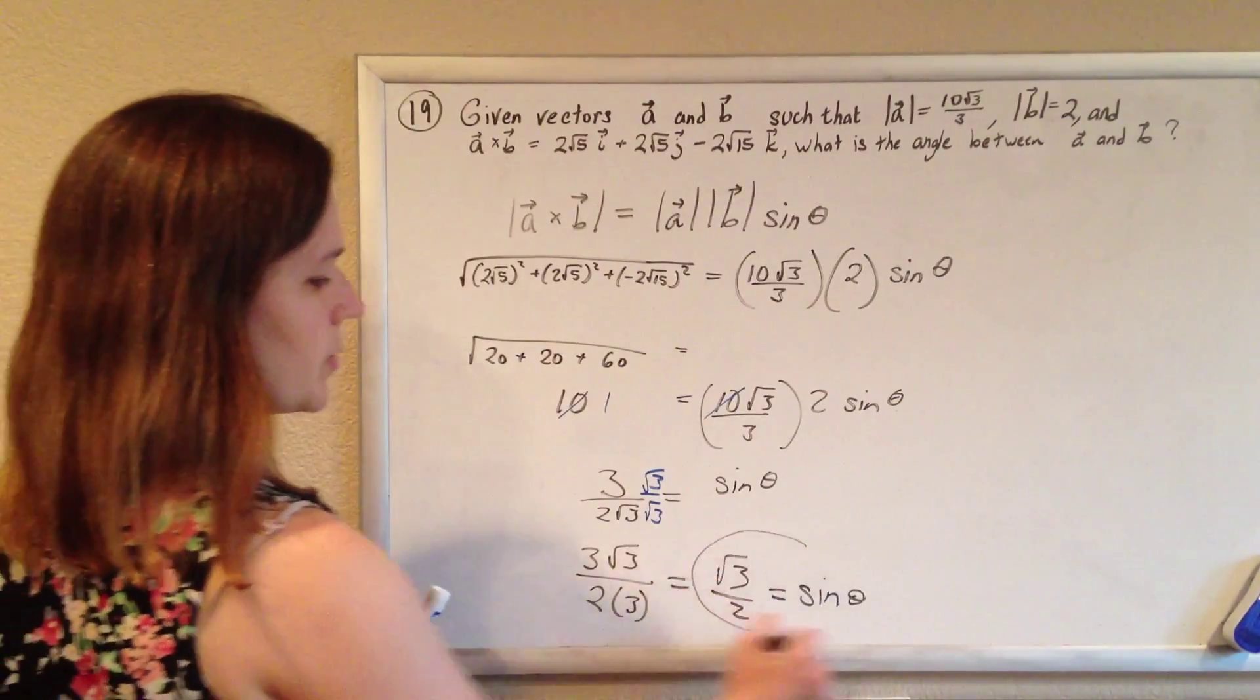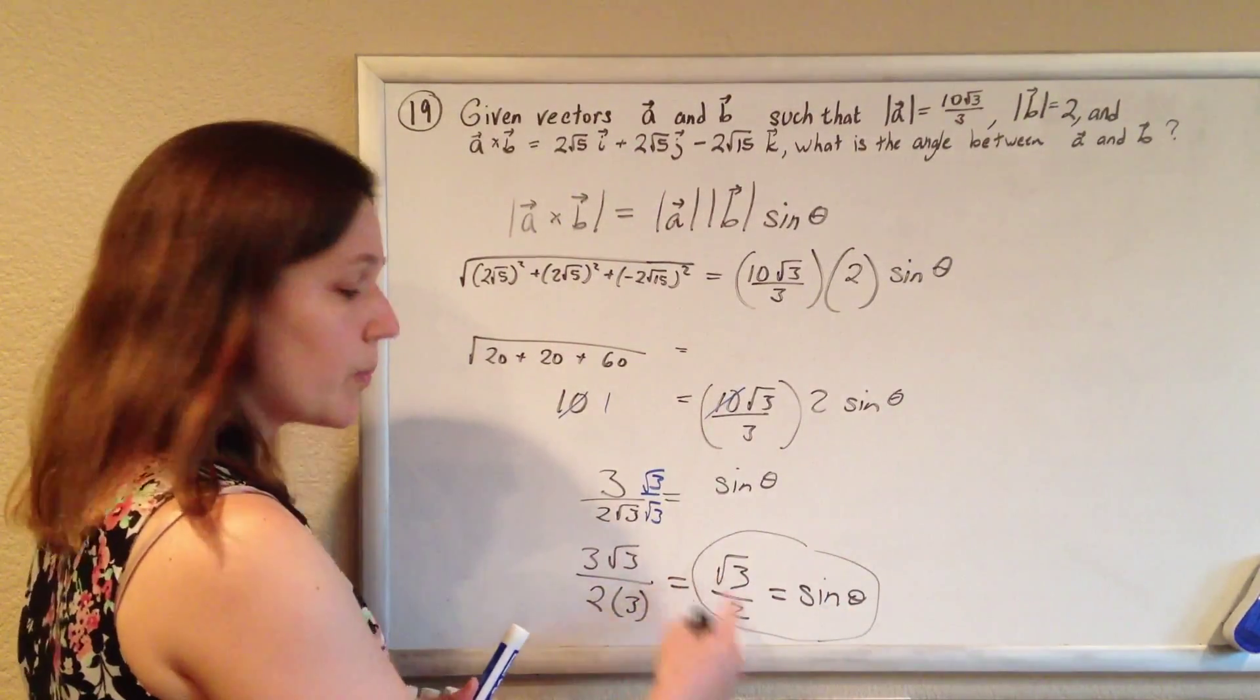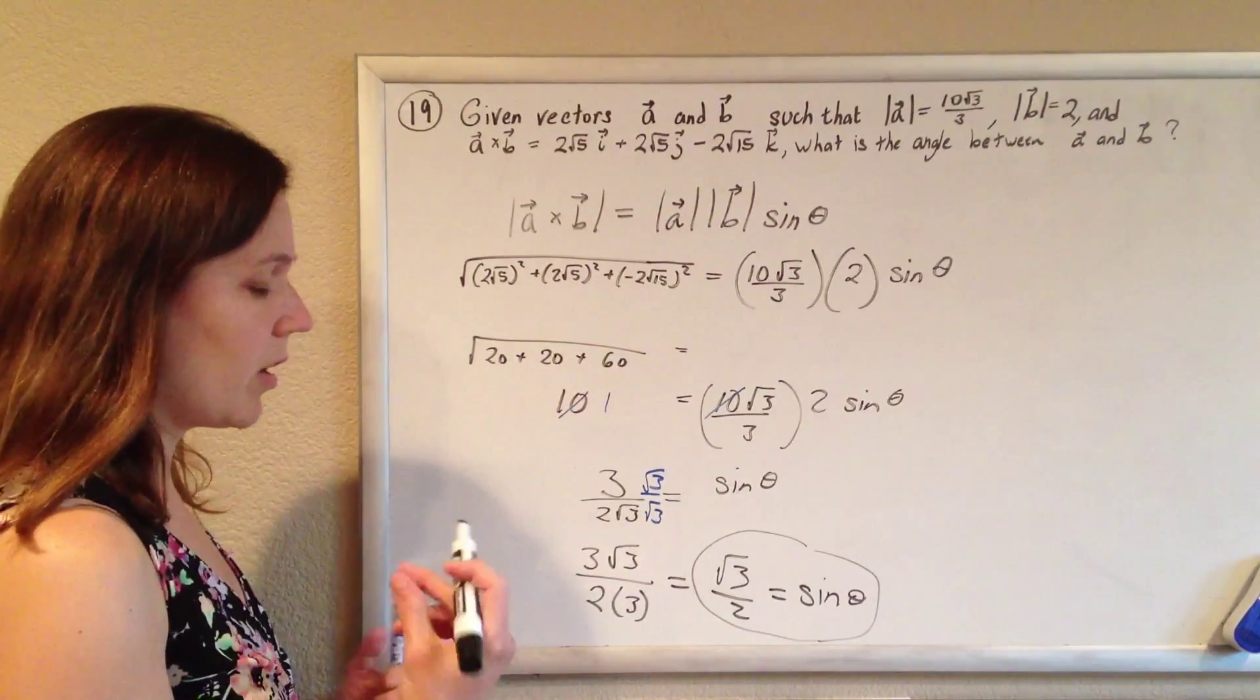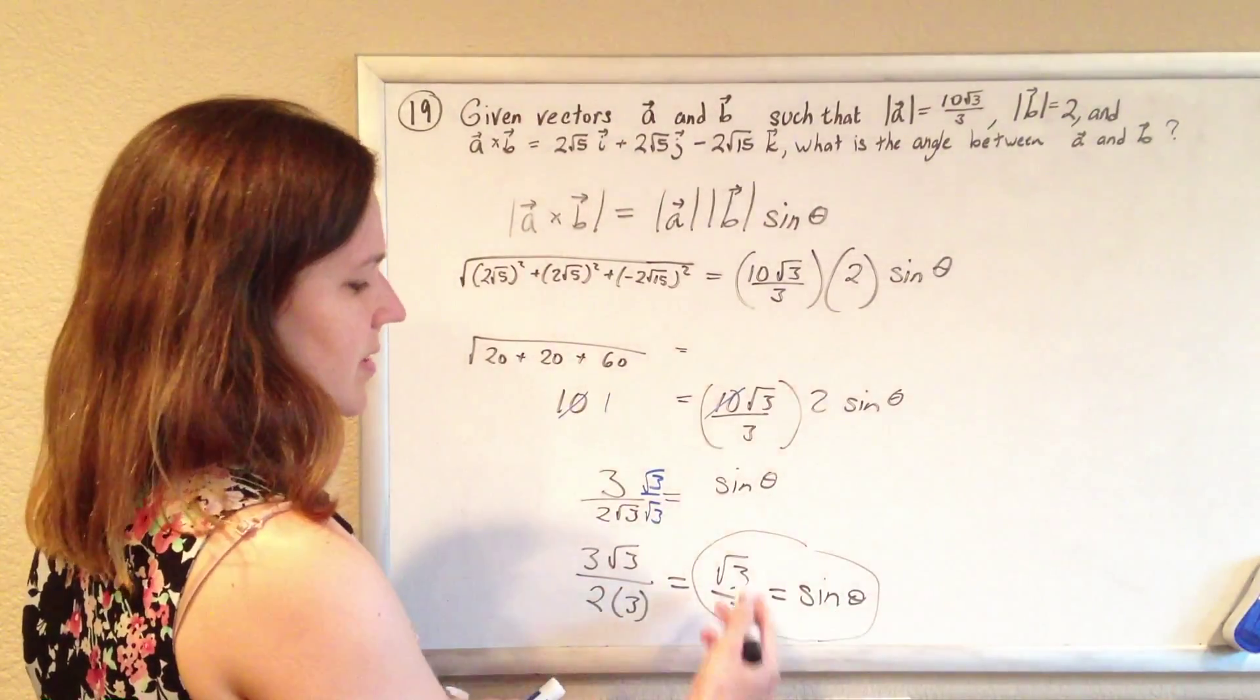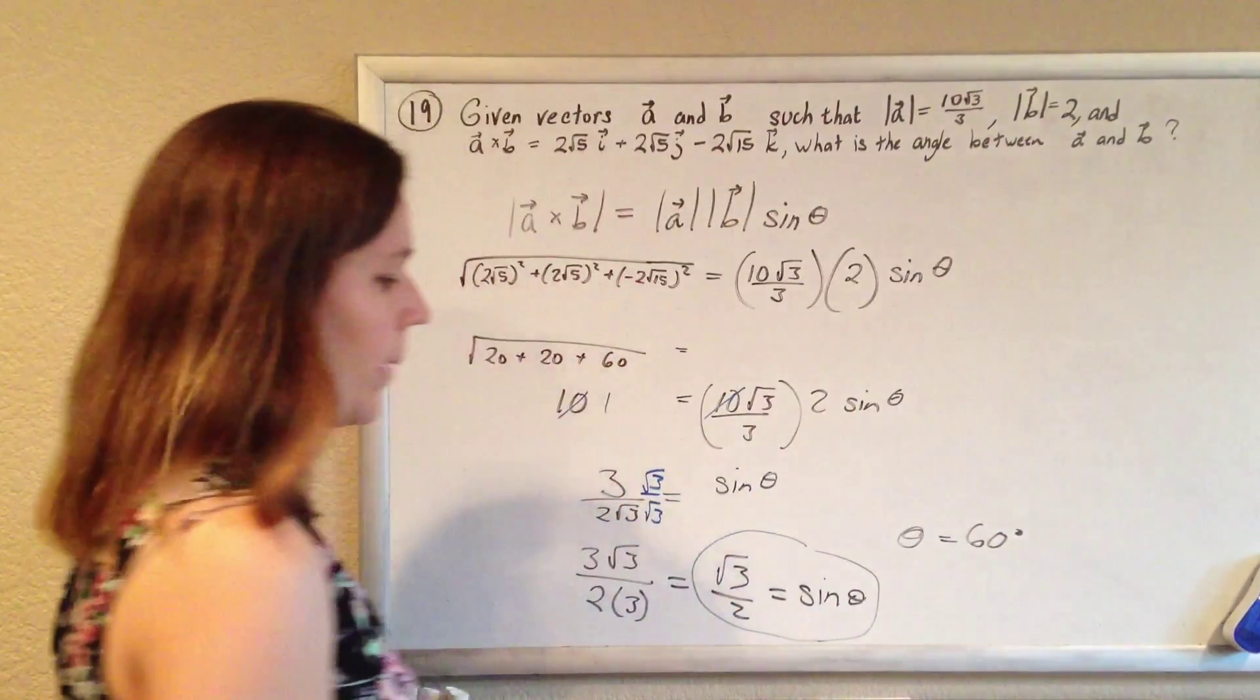So if root 3 over 2 is supposed to equal the sine of theta, and you want to know what angle is, this looks familiar, right? If you know your unit circle from trig right off the bat, you can say, oh, the angle that gives me a sine of root 3 over 2, that's 60 degrees, or pi thirds.